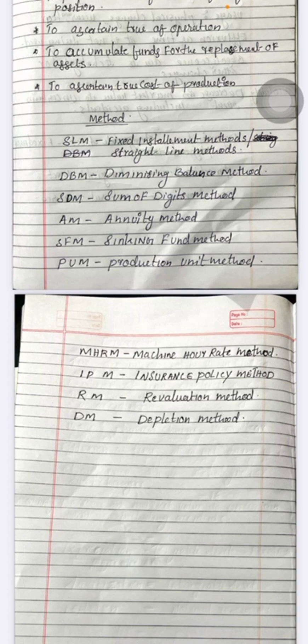The two main methods are the Straight Line Method and the Diminishing Balance Method.